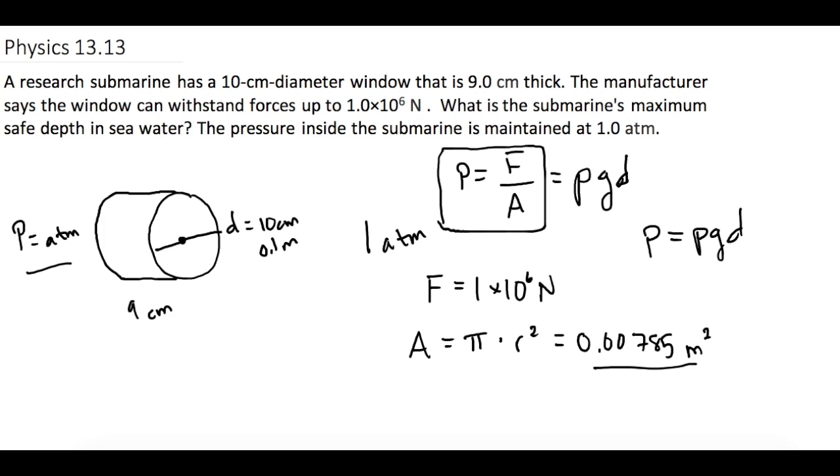That's totally fine if you want to do that two-step problem. Or we could also look at it this way. Since all three of these are equal to each other, why don't we just say F over A is equal to rho gd.